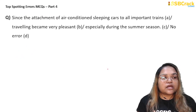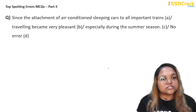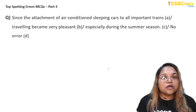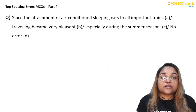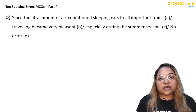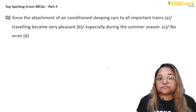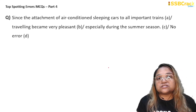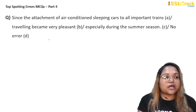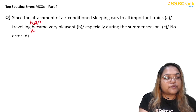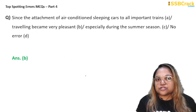Next question: 'Since the attachment of air-conditioned sleeping cars to all important trains, traveling became very pleasant especially during the summer season.' The attachment has already happened recently, so the effect is current. Instead of using simple past 'became,' we should use present perfect to show the result of a recent action. It should be 'traveling has become very pleasant.' The error is in part B and the answer is option B.